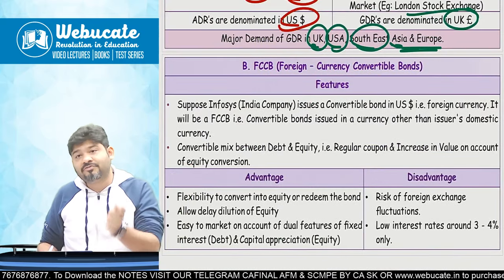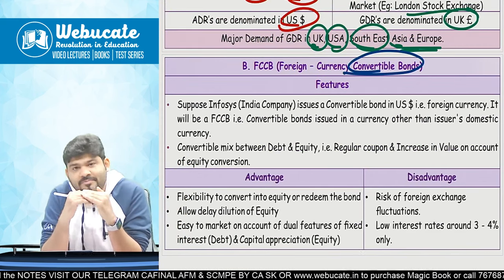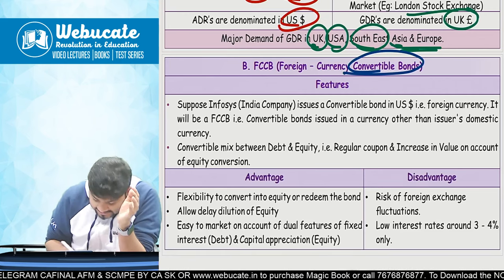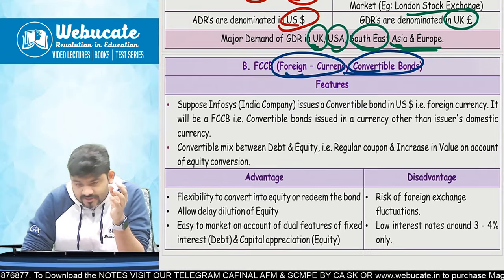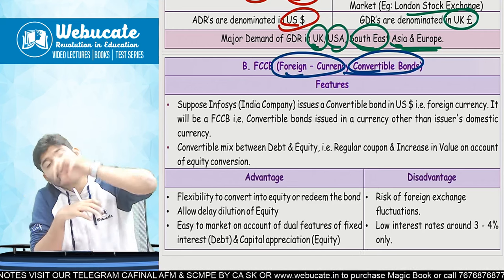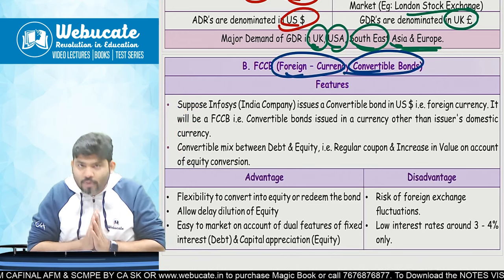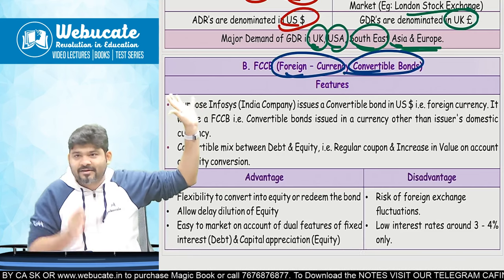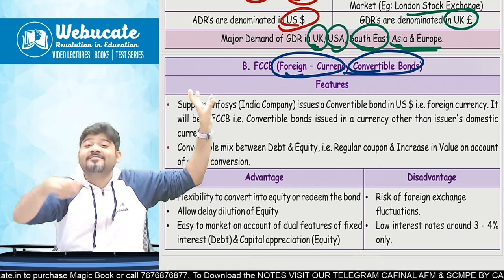Then comes Foreign Currency Convertible Bonds (FCCB). A convertible bond is a bond that at a later point in time will be converted into equity shares. FCCB is the same, but denominated in foreign currency issued outside India. If Infosys wants to issue convertible bonds domestically, it comes up with regular convertible bonds. But if it wants to issue them outside the country, it will issue FCCBs. So FCCBs are convertible bonds issued in a currency other than the issuer's domestic currency.